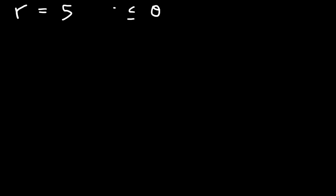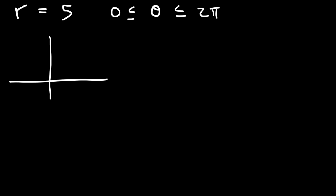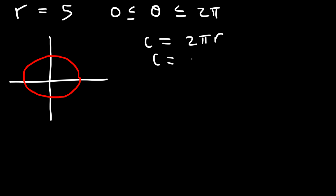Try this one. Let's say r is equal to 5, and we want to find the arc length from 0 to 2π. r = 5 is a circle centered at the origin with a radius of 5. We need the arc length of the entire circle, which is just the circumference: 2πr = 2π times 5, so the answer is 10π.